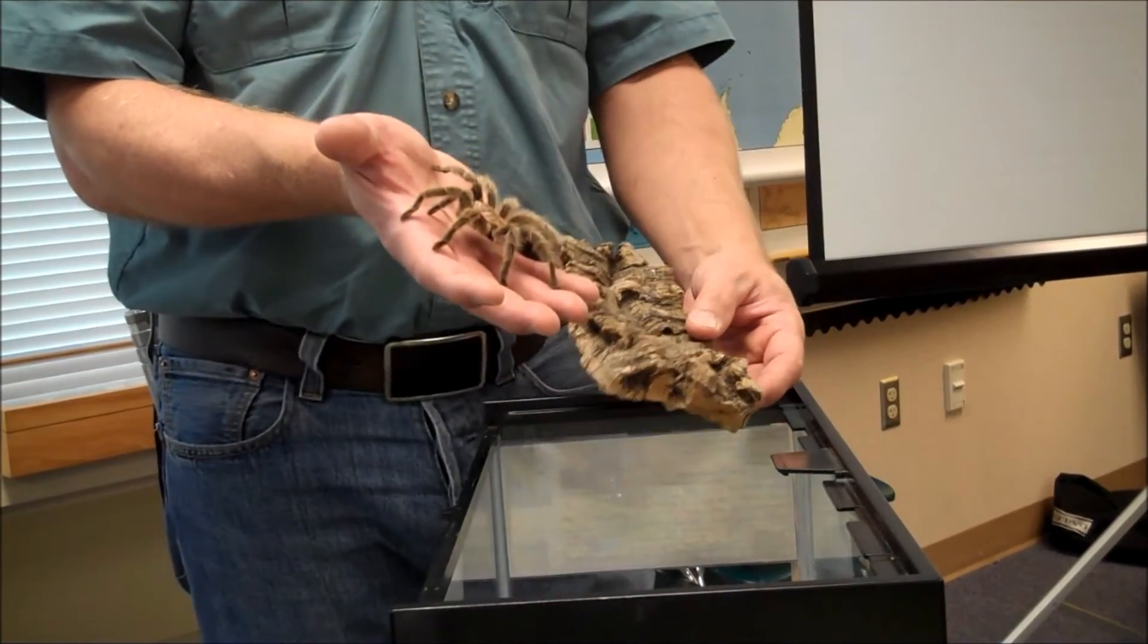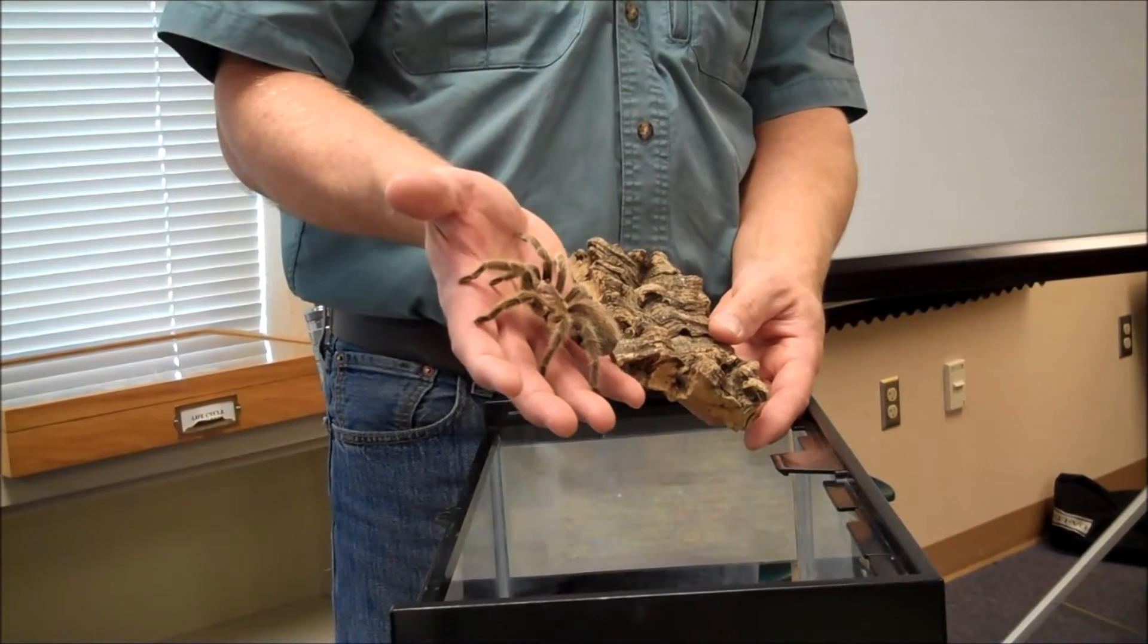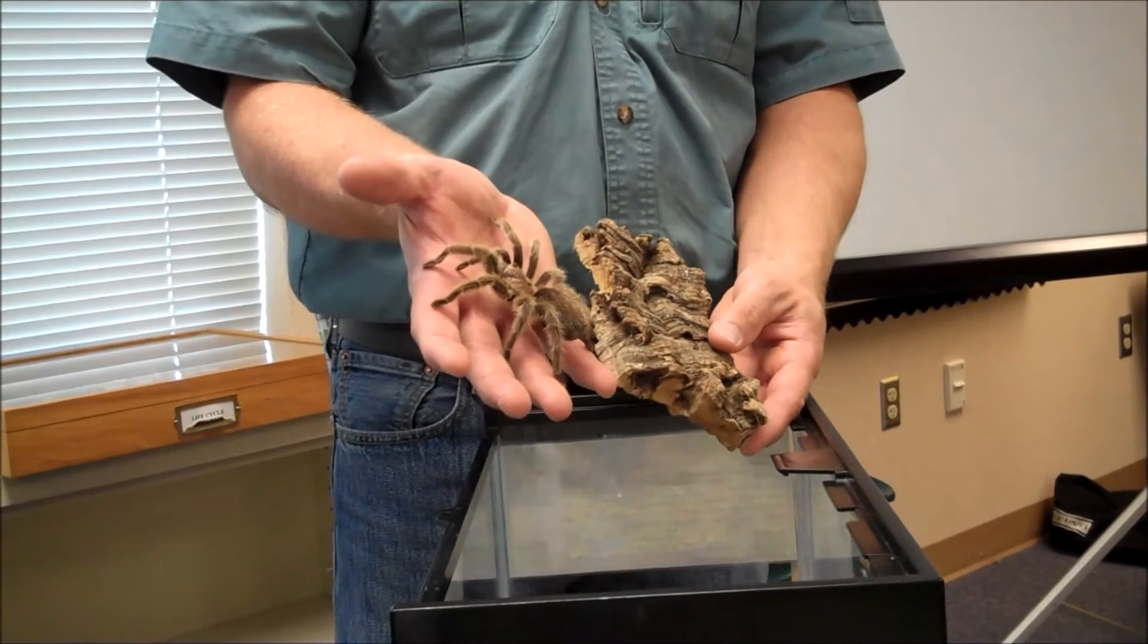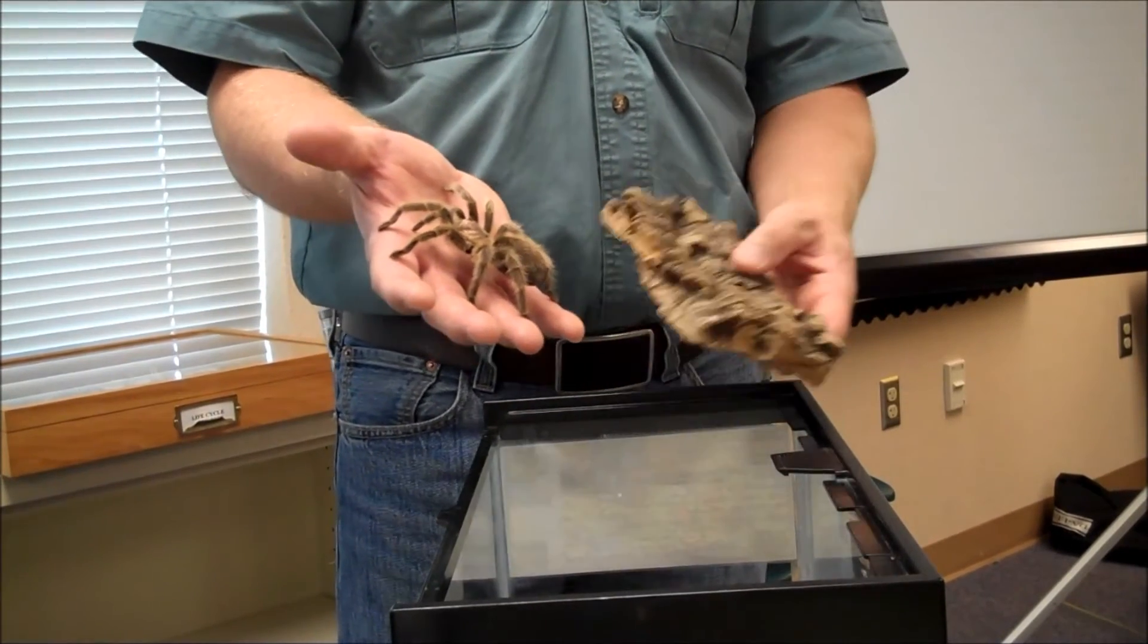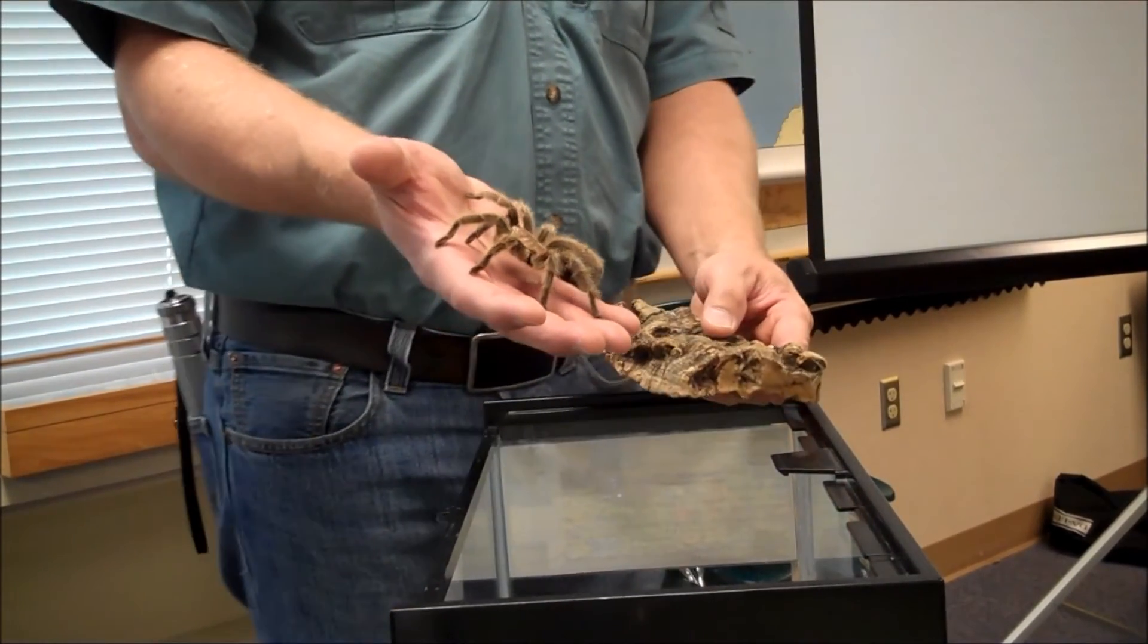But guess what would happen if she was to bite me? I'd have to put her back in her tank, I'd have to wash my hands and put a band-aid on. I'd be okay. I'd bleed a little bit, but I'd be all right. They don't have venom, well they do, but the venom is like a bee sting.